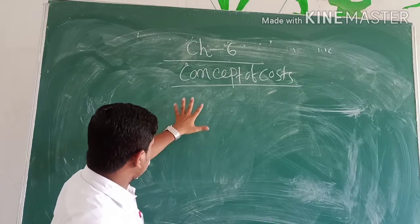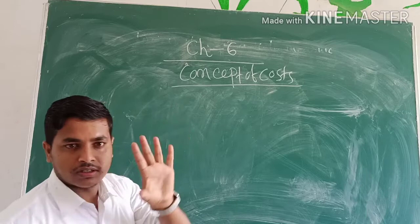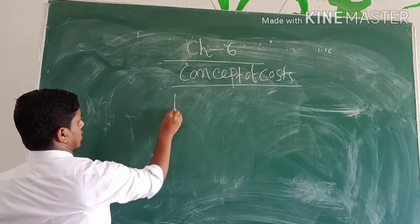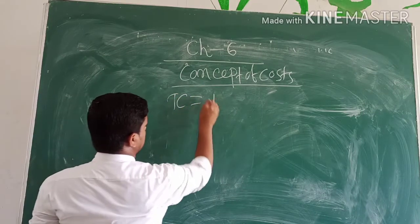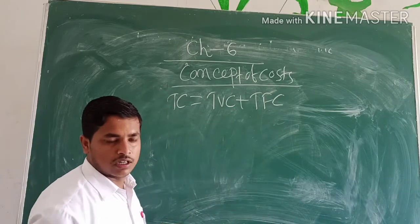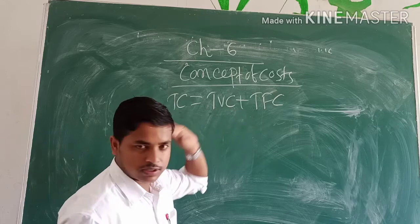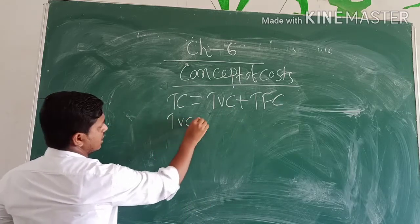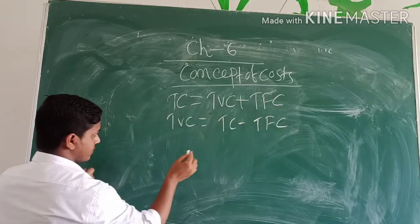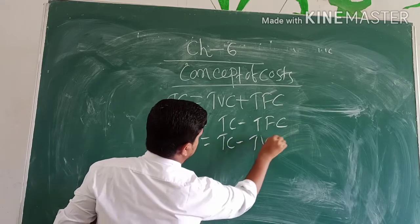We are going to discuss some of the important formulas of cost. TC equals TVC plus TFC, which we have already discussed in our last videos. Now, TVC equals TC minus TFC and TFC equals TC minus TVC.